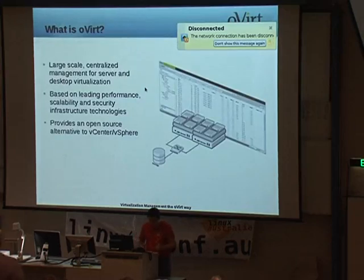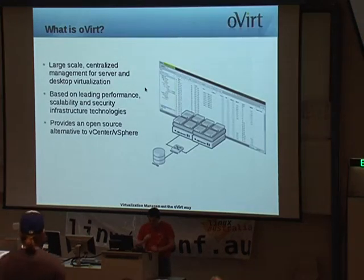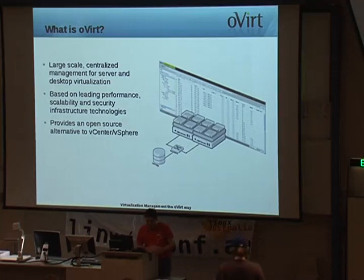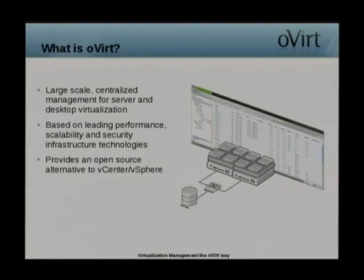Just a little bit about me. I've been working with virtualization technologies for the last six years, including VMware, Xen, and KVM systems. For the last two years, I've worked with Red Hat as a technical writer for the cloud and virtualization products. I've been writing for oVirt for about the last year and a half. My favorite part is the API — it's a REST-based API, and I find it very clean and easy to use.